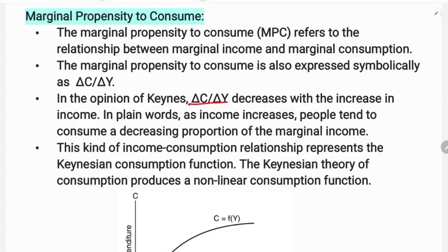In the opinion of Keynes, delta C by delta Y decreases with an increase in income. In plain words, as income increases, people tend to consume a decreasing proportion of the marginal income.